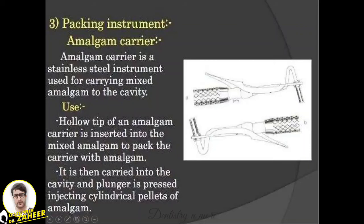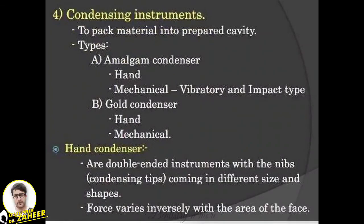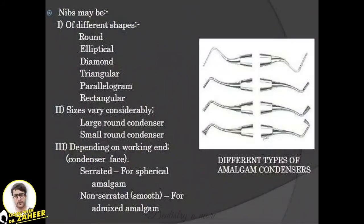Packing instruments include the amalgam carrier — a stainless steel instrument used for carrying mixed amalgam to the cavity. The hollow tip is inserted into the mixed amalgam and carries it to the cavity. Condensing instruments include hand condensers, mechanical condensers, and gold condensers. Hand condensers are double-ended instruments with nibs of different sizes — small and large — and nib shapes include round, elliptical, diamond, triangular, parallelogram, rectangular, serrated, and non-serrated types.